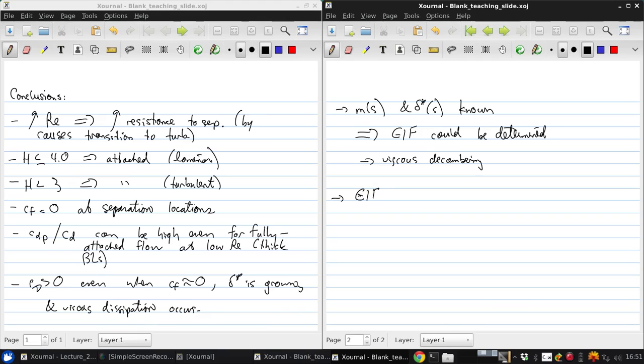Next, we assumed that the equivalent inviscid flow was known, which meant that UE(S), was available. That means we can determine the boundary layer integral defects, P(S) and K(S), or the thicknesses, delta star of S and theta of S. And that meant that profile drag could be determined by either the far downstream momentum defect or the far downstream kinetic energy defect divided by the free stream velocity.